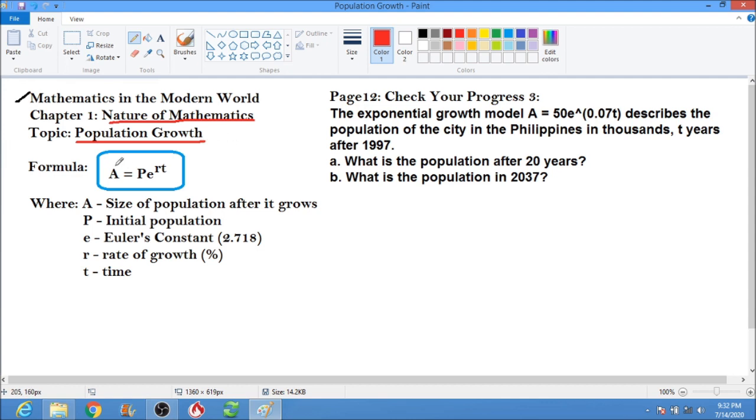The population growth formula is A equals Pe to the rt, where A is the size of the population after it grows, P is the initial population, E is Euler's constant which is 2.718, r is the rate of growth in percentage - if it's a percentage you have to divide it by 100 - and t is your time, either in years, months, hours, or whatsoever.